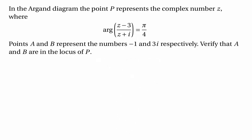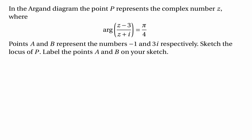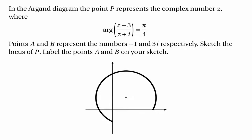Now substituting z equals 3i into (z−3)/(z+i) gives (3i−3)/(4i). Multiplying by (−i)/(−i) gives (3+3i)/4, or 3/4 plus (3/4)i. Again that's clearly on the line y equals x and so has argument π/4. This shows that both minus 1 and 3i lie on the locus. For the sketch, it's an arc of a circle which begins at 3 and goes anticlockwise to minus i, and it's a major arc with minus 1 on the negative real axis and 3i on the positive imaginary axis.